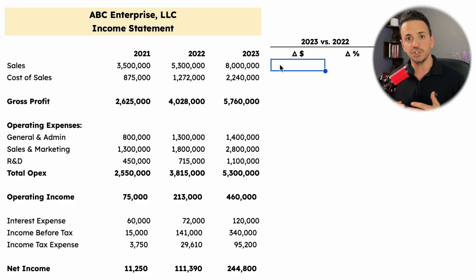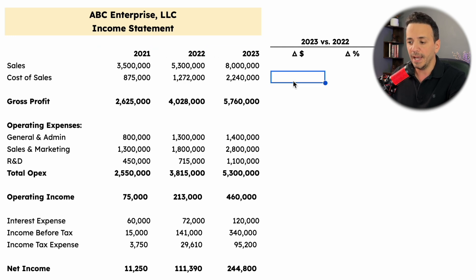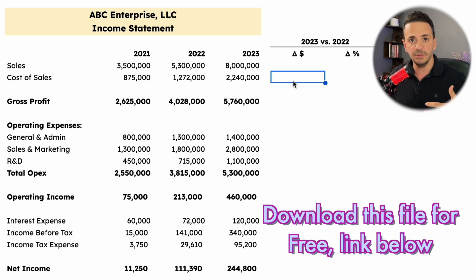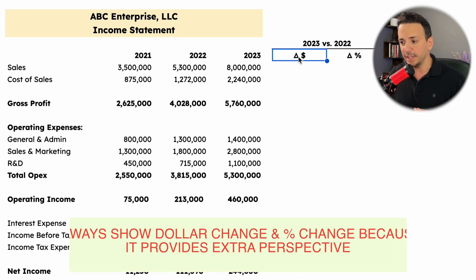Now let's perform a horizontal analysis from scratch together. We have the income statement for ABC Enterprise LLC for three consecutive years: 2021, 2022, and 2023. This file will be attached in the video description so you can download it. We're comparing 2023 versus the prior year 2022, calculating both a dollar change and a percentage change — because the percentage gives you an extra perspective beyond just the dollar amounts.